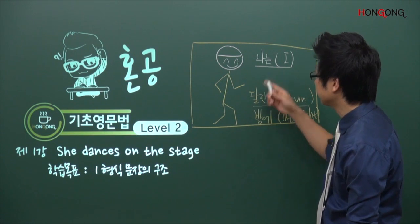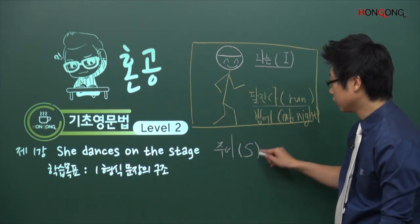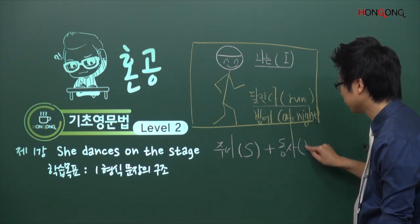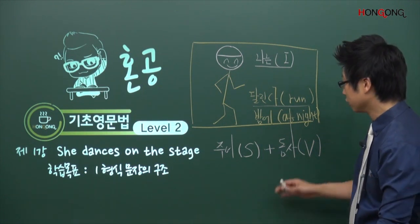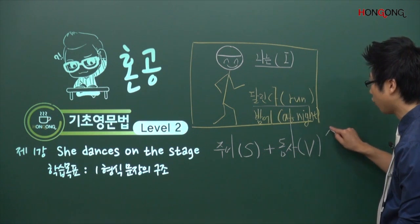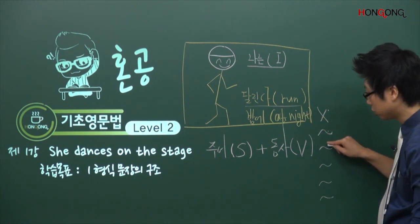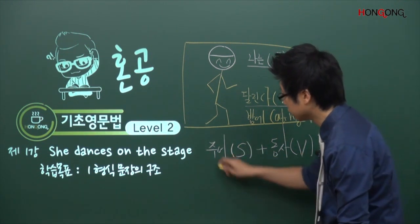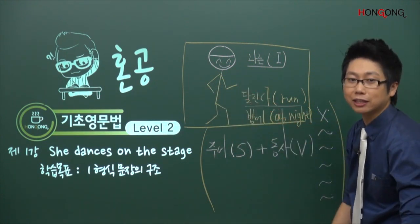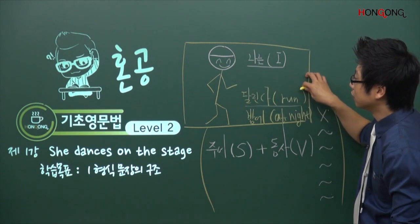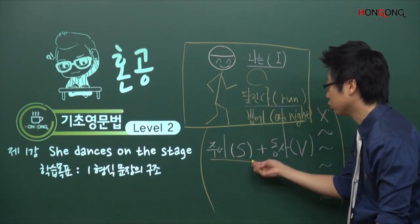이것을 유식한 말로 옮겨보면, '나는'이란 말은 영어에서 주어라고 합니다. 영어로는 S(subject)라고 합니다. 그리고 '달린다'는 동작이죠. 동작을 동사라고 하고 영어로는 V라고 합니다. 뒤에 밤에, 몇 시에, 어디에서 등 굉장히 많은 말들이 붙겠죠. 주어 동사 뒤에 뭐가 붙느냐에 따라 다르고, 안 올 수도 있어요. 영어는 우리말과 달리 사람이 먼저 나온 다음에 바로 동작을 나타냅니다.